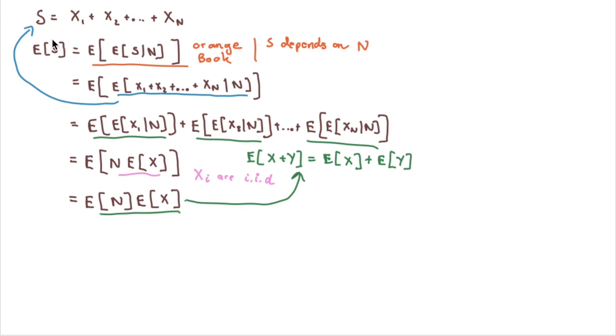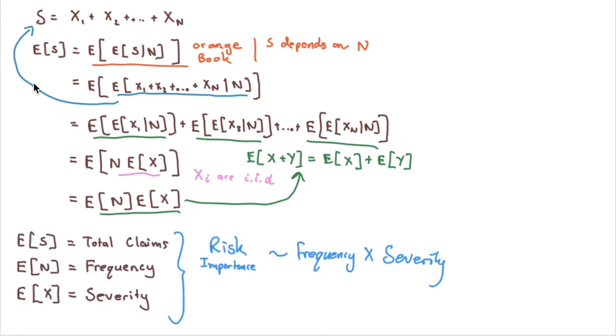So what we have is that what we're basically saying is that the total losses is equal, the expected total losses is equal to the expected number of losses times the expected loss of each one. And this is again, quite nice and intuitive.